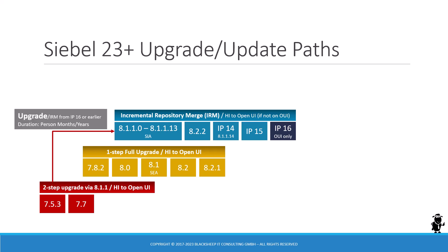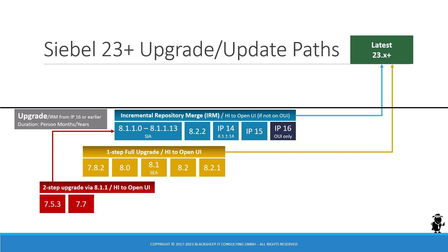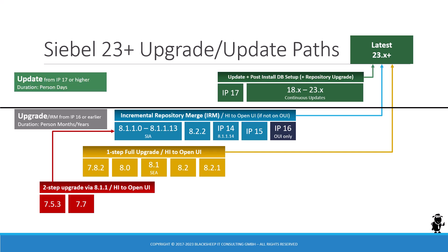Going from these older versions to the latest 23.x is a month-long project, measured in person months or person years. You need to get professional help from consulting and Oracle to get your upgrade project on the way and reach the latest Siebel CRM. So if you're already on IP 17 or anything higher — including 18, 19, 20, and beyond — then we talk about updates. An update is measured in person days; it's just a matter of a few days to get your environment from that older version to the latest 23.x or higher.